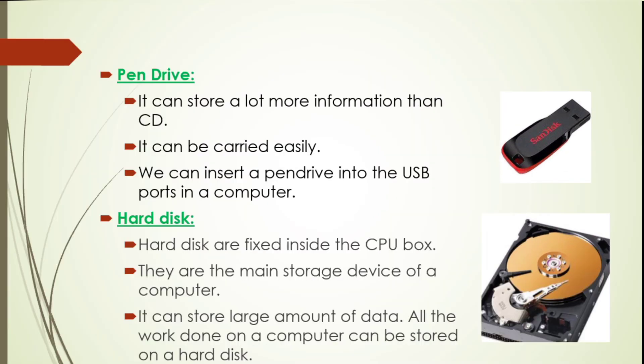The next one is the hard disk. Hard disks are fixed inside the CPU box, so they are found inside the CPU box. They are the main storage device of a computer and can store a large amount of data. All the work done on a computer can be stored on a hard disk.